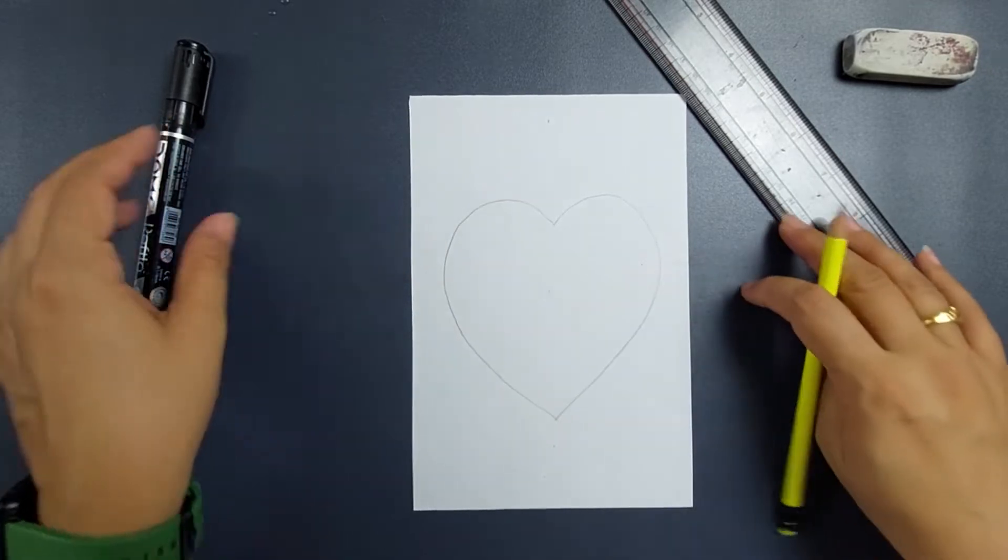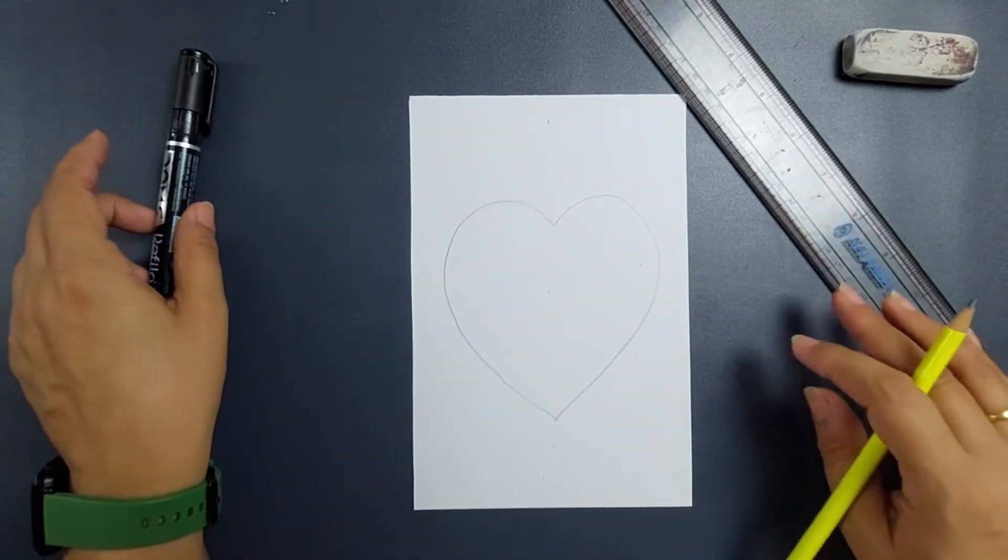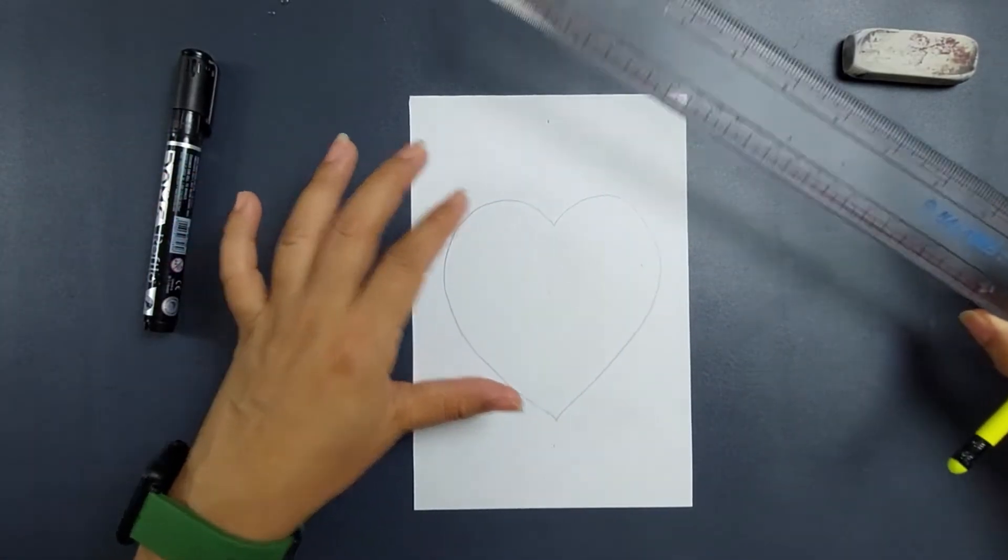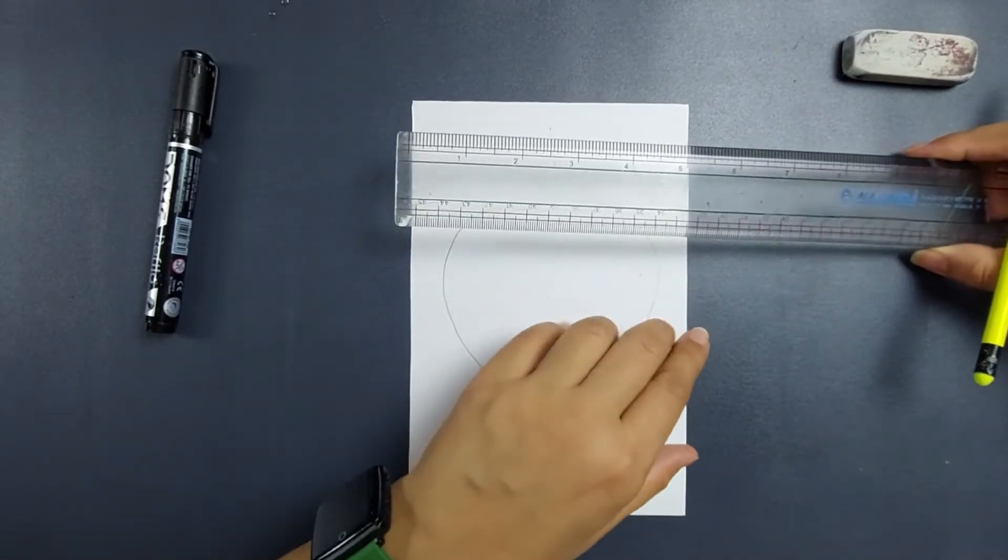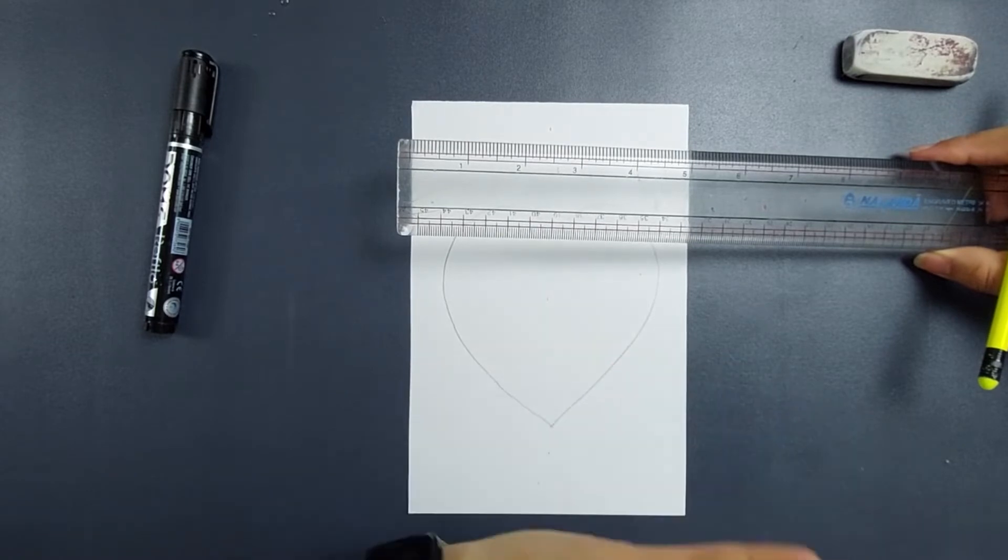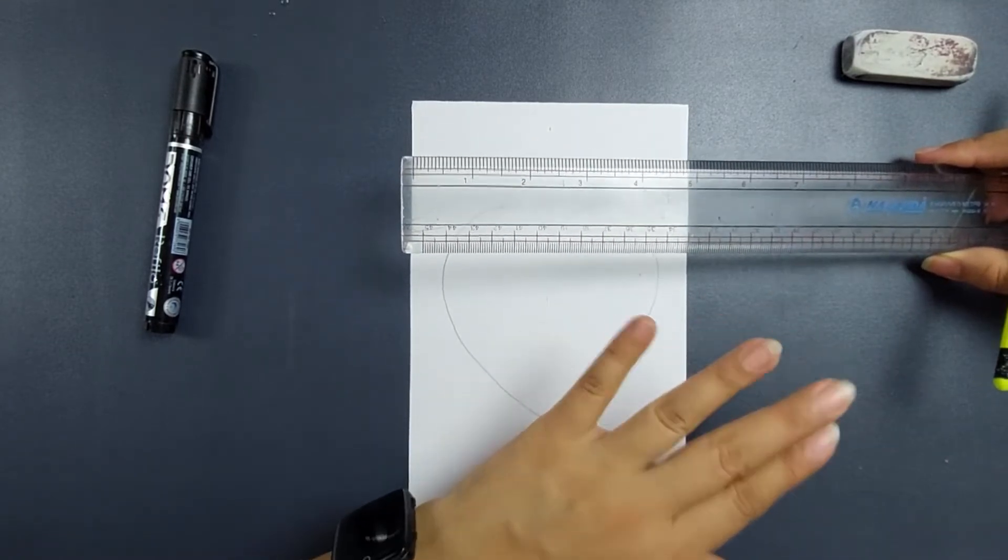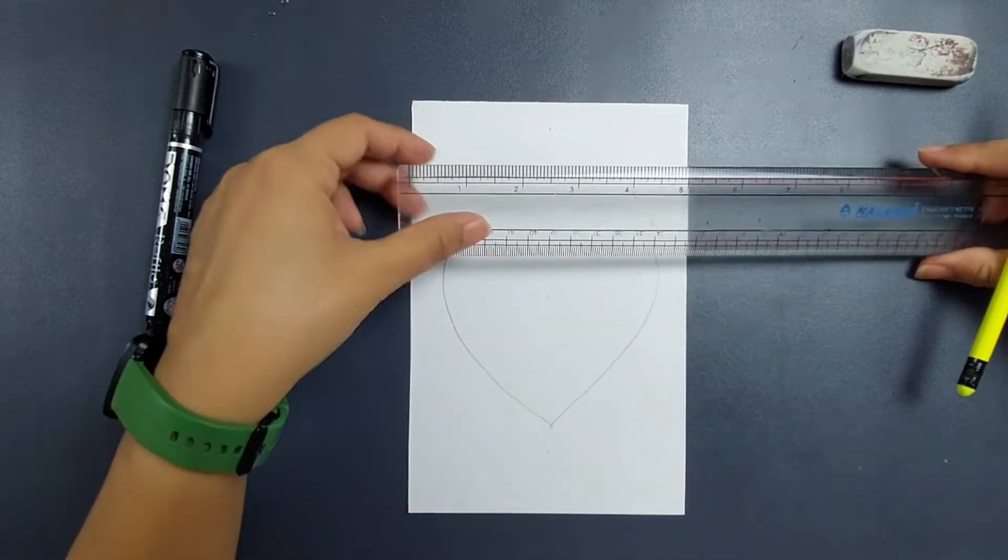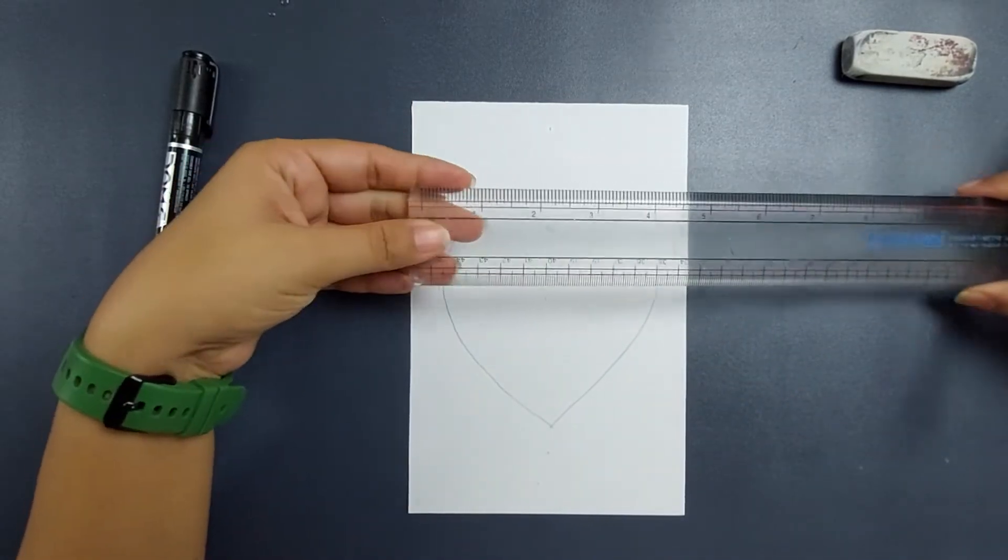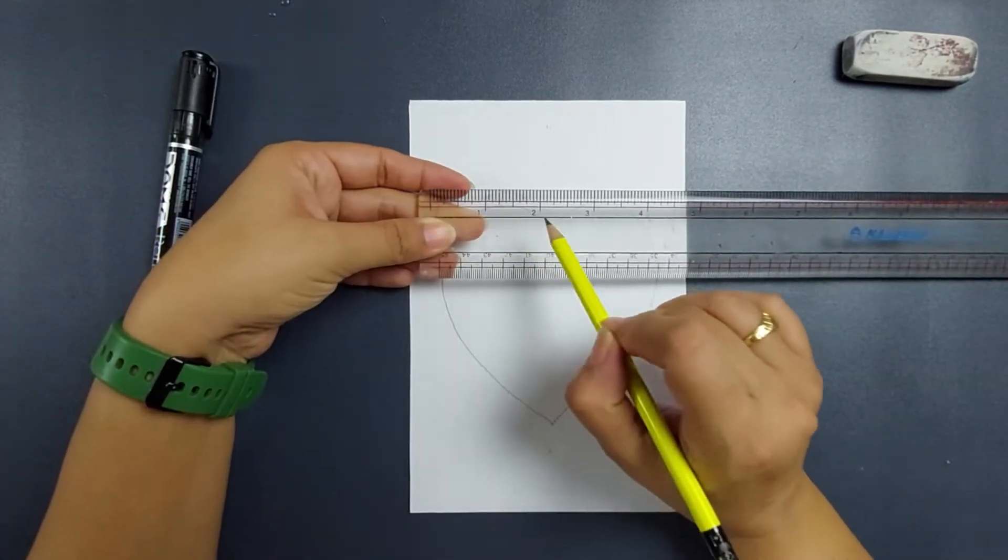First we'll outline it with a marker, and after that we'll be making a few lines. First we'll make it with the pencil and then we'll be outlining everything with a thin marker. We also require a thick marker or a black pen to color it.